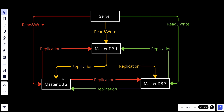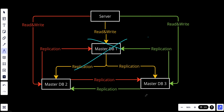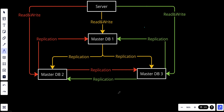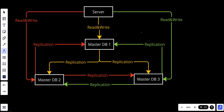Multi-master databases are designed to provide several benefits including improved write scalability, high availability, and fault tolerance. If one master goes down, the other two masters will continue to support reads and writes. We are available all the time — we have high availability. We can scale by adding more masters to handle more and more load, and we make sure we will not have any downtime.